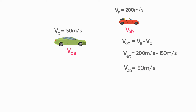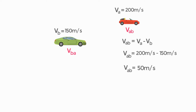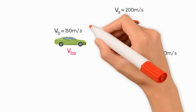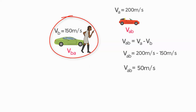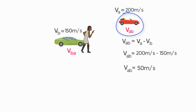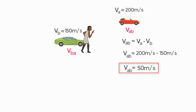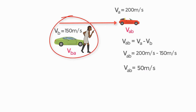What does VAB equals 50 meters per second mean? It means that if you are moving in car B and you observe car A, car A will be moving 50 meters per second faster than you and your car.